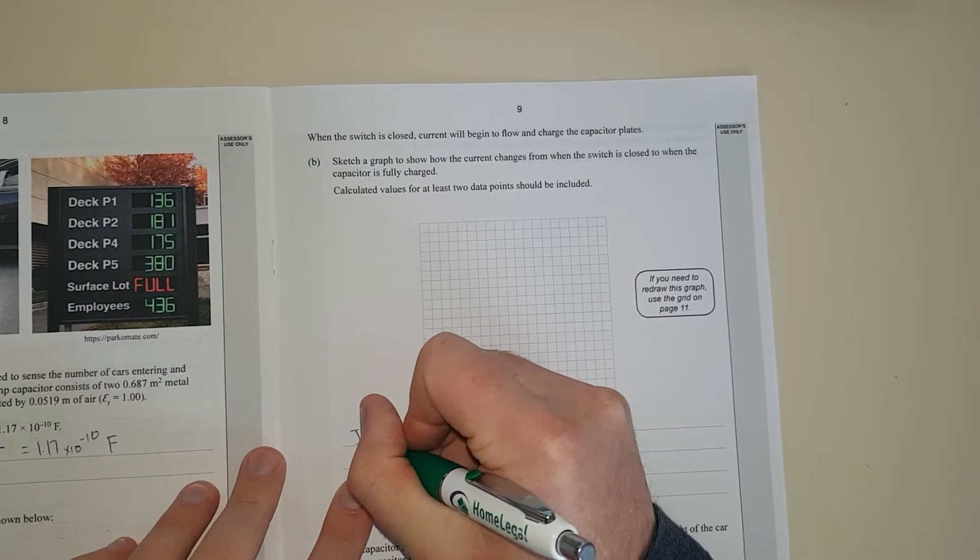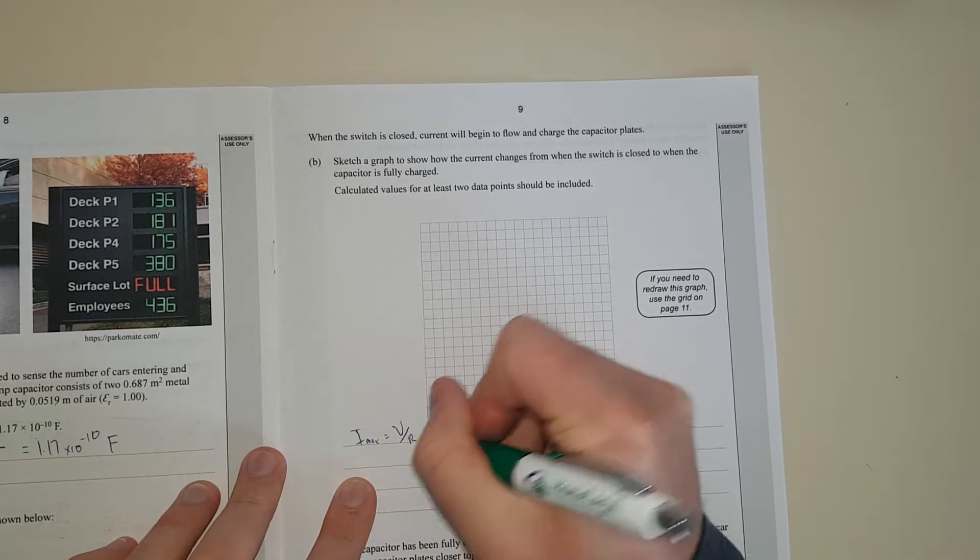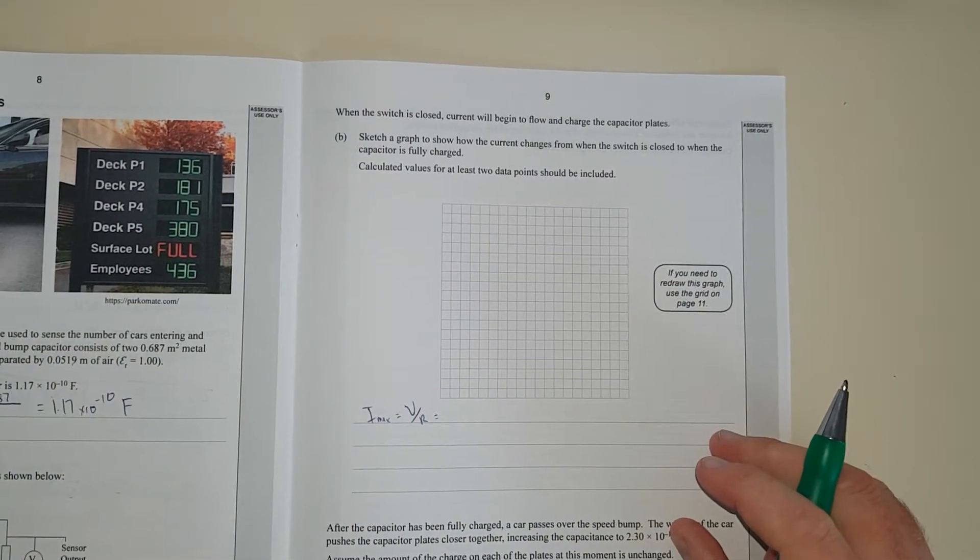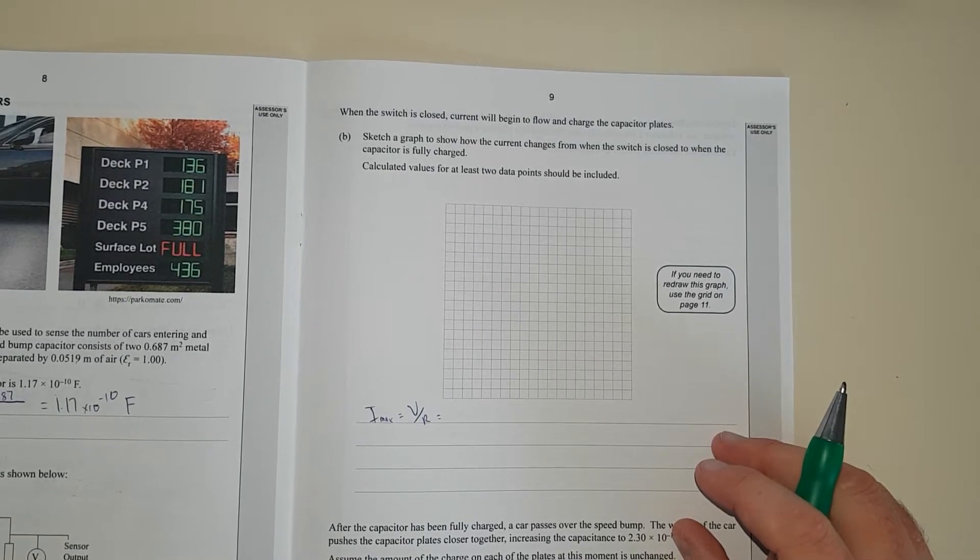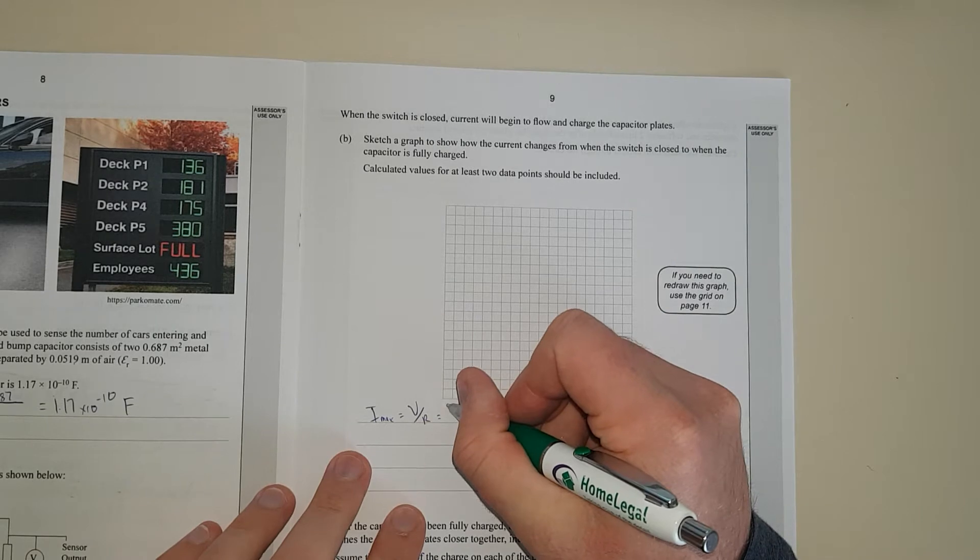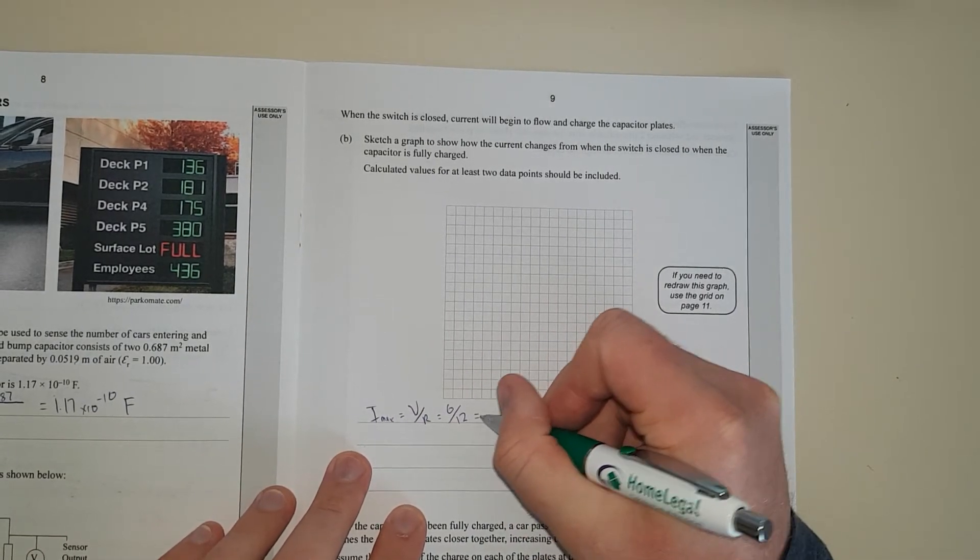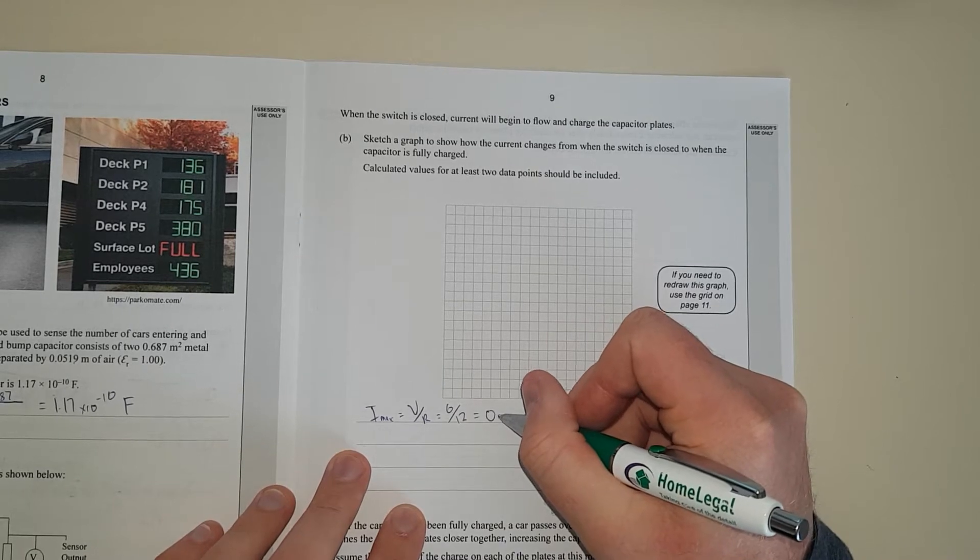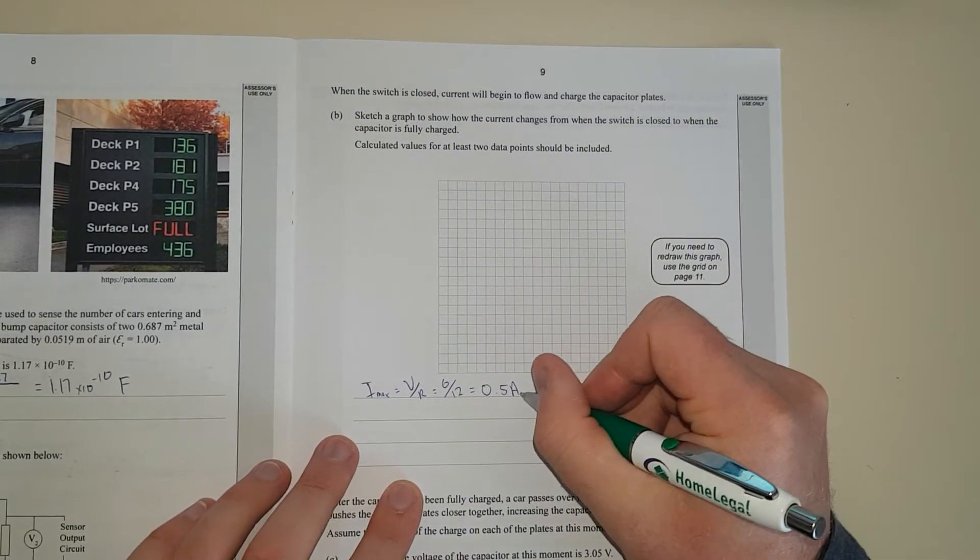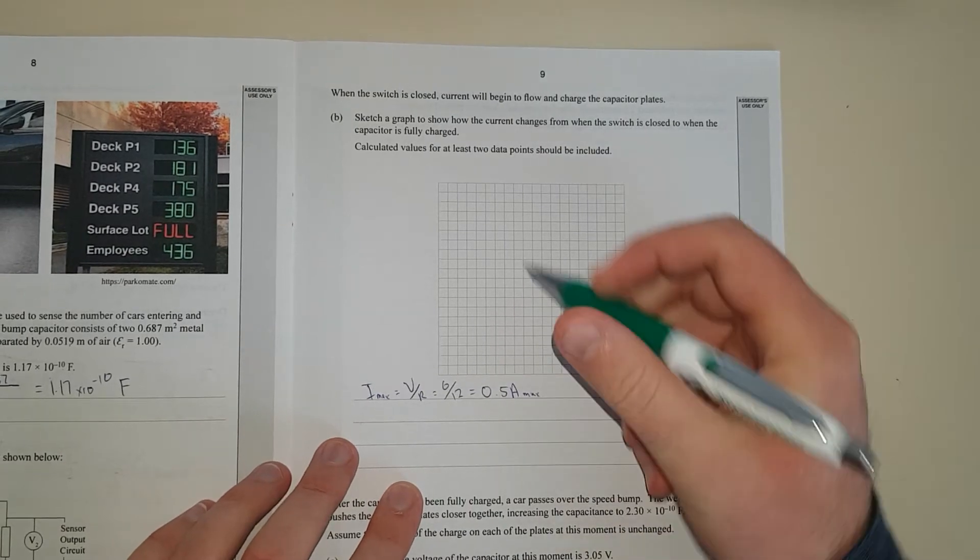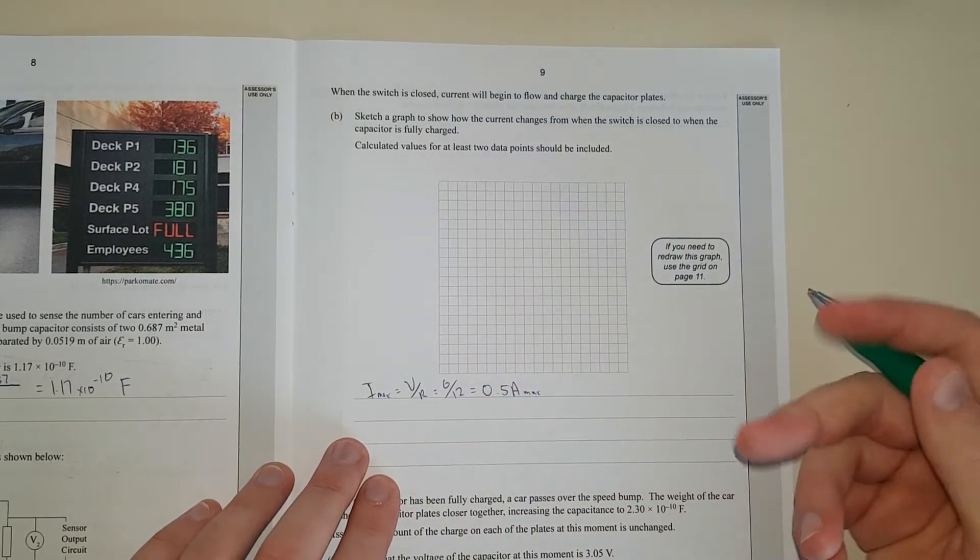So I max is just going to be equal to V over R. So initially when you first flip the switch, the capacitor is completely uncharged. So current would flow as if it was just a regular circuit. So that's just going to be 6 divided by a 12 ohm resistor. That's half an amp. So that is the max current. And that will start off at the top of the graph.